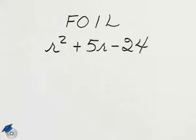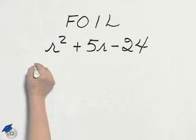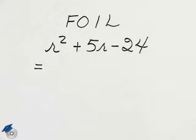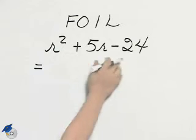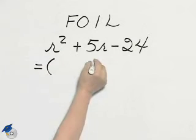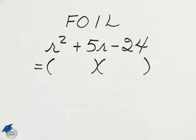To factor trinomials, think where they came from. FOIL was used for multiplying; factoring really is a type of dividing. So if I have a trinomial like r squared plus 5r minus 24, I might at least think and try for a pair of binomials that would foil back into the r squared plus 5r minus 24.